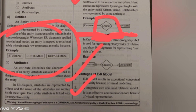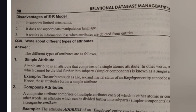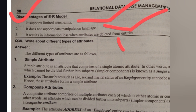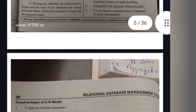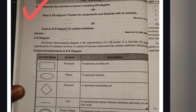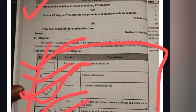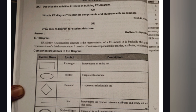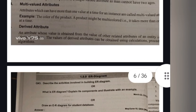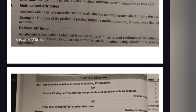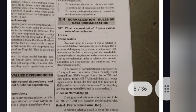Further advantages of ER Model include being an effective communication tool — using diagrams instead of text makes it more convenient and easy to understand. A disadvantage is that it has limited constraints, does not support DML commands, and can result in information loss. The ER Model notation types include rectangle, ellipse, diamond, line, double ellipse, dashed ellipse, double rectangle, and double lines — drawing this table is important.